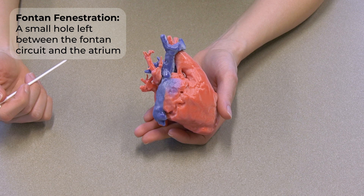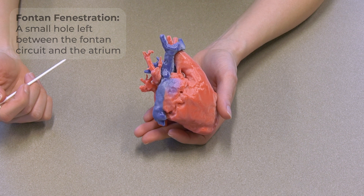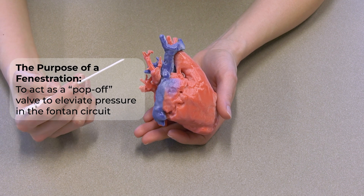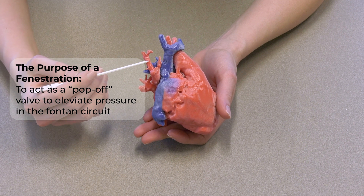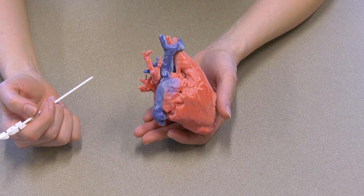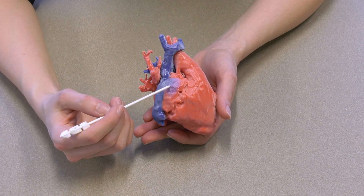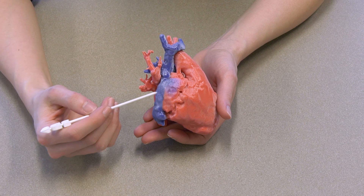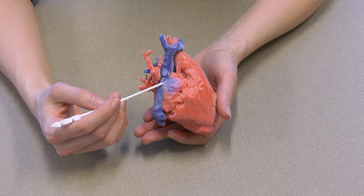This small hole is left there intentionally. The reason to leave a Fontan fenestration is to serve as a pop-off valve if the pressure in the Fontan circuit is high, or if it is harder for the blood to travel directly to the lungs. When all the deoxygenated blood flows directly to the pulmonary arteries and lungs through the Fontan circuit without being pumped by the heart, the pressure in the veins in the body increases, which can be hard for the body to handle. This is why the fenestration or pop-off valve may be used to allow some blood from the body to directly enter the heart if the pressure in the Fontan circuit is high.